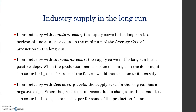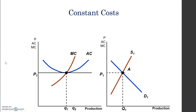If we have an industry with decreasing costs, the supply curve in the long run has a negative slope. When production increases due to a change in demand, prices of the factors of production in this industry become cheaper — these are economies of scale.